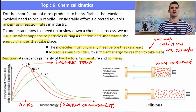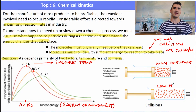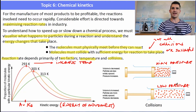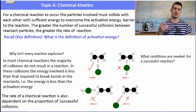For a chemical reaction to occur, the particles involved must first collide, and secondly they must have sufficient energy to overcome the activation energy. The greater the number of successful collisions between reactant particles, the greater the rate of reaction.